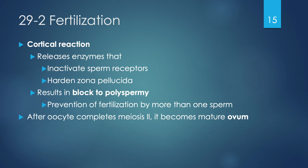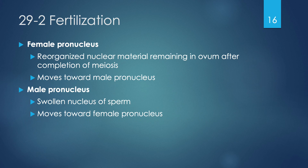In the cortical reaction, enzymes are released that inactivate sperm receptors, reducing the number of docking stations available to sperm, and they also harden the zona pellucida. Both of these together result in a block to polyspermy — preventing more than one sperm from fertilizing the same oocyte. Once the oocyte completes meiosis II, it can be known as a mature ovum, and the nuclear material inside reorganizes into the female pronucleus.